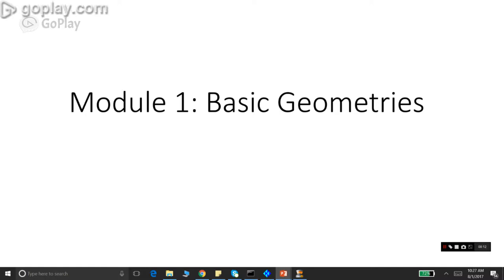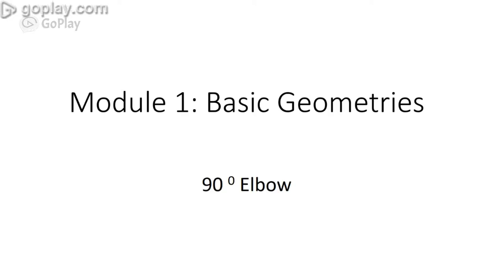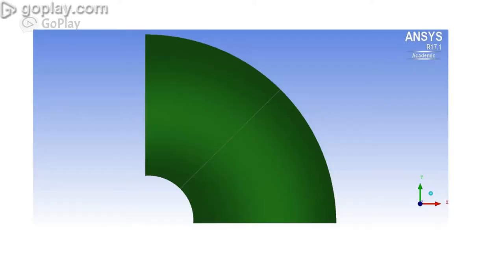Module 1 covers basic geometries, and the geometry we are going to consider here is a 90-degree elbow. This geometry helps to connect two pipelines which are perpendicular to each other, easing the transition between them and helping to remove any unwanted turbulence in the flow when flow comes from one pipeline to another perpendicular pipeline. This is a building block of many complex pipe systems, which is why we have chosen this geometry.